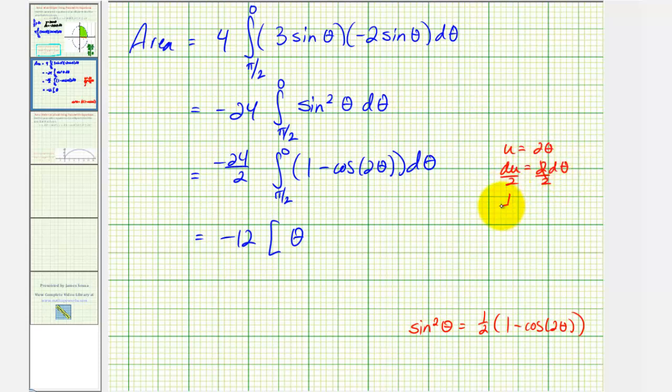Notice how d theta would be equal to one-half du, so we have an extra factor of one-half when integrating cosine two theta. So the anti-derivative would be minus one-half sine two theta.